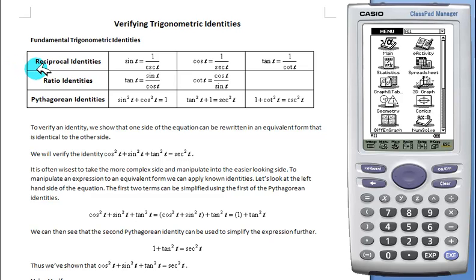Take note of the reciprocal identities, including cosecant, secant, and cotangent. These will be necessary since the ClassPad does not currently have buttons for those three functions.